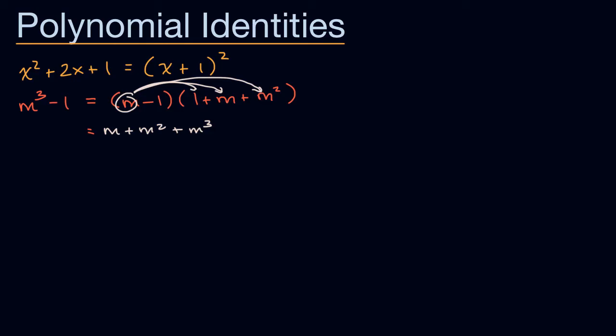And then I would take this negative 1 and then multiply and then distribute that times every term in that other expression. So negative 1 times 1 is negative 1. Negative 1 times m is negative m. And negative 1 times m squared is negative m squared.